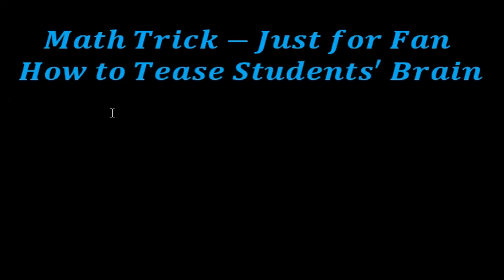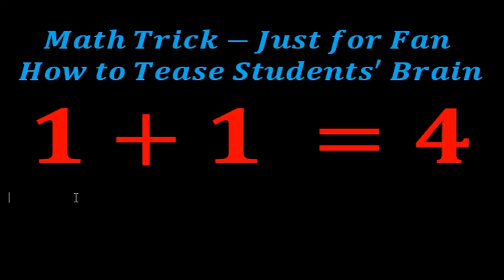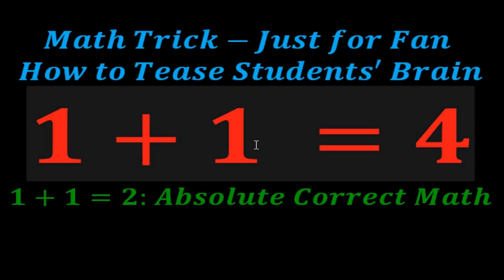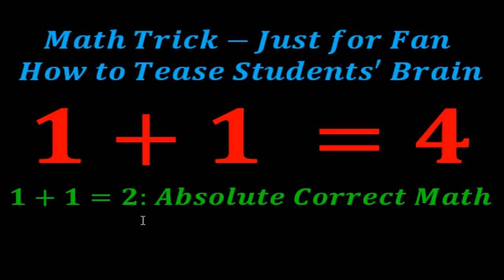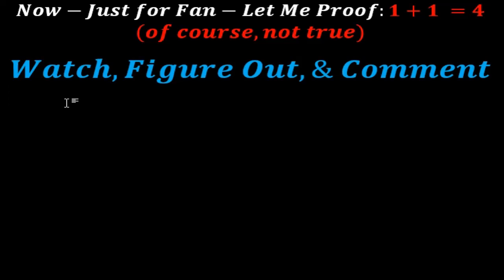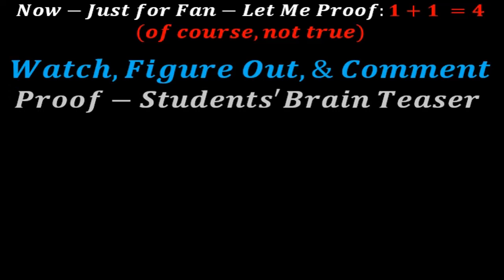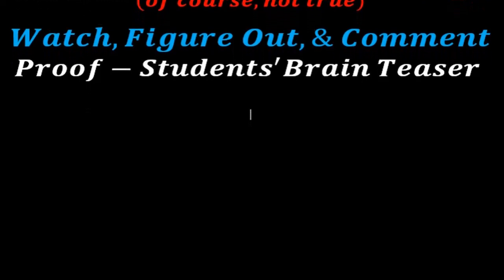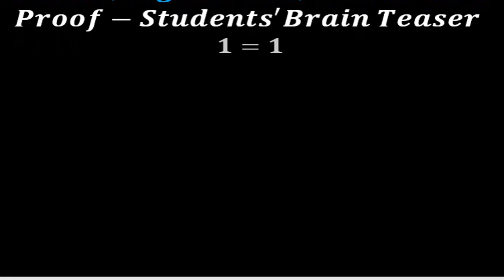This is a math trick just for fun — it is a brain teaser for students. I'm going to prove that one plus one equals four. This is absolutely not true; the truth is one plus one equals two, that is absolute math. But just for fun, let me prove one plus one equals four. This is a brain teaser, not a real proof.